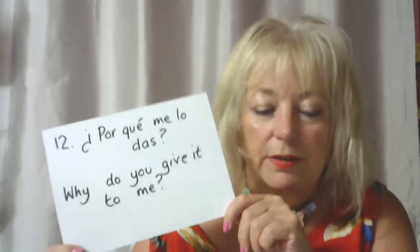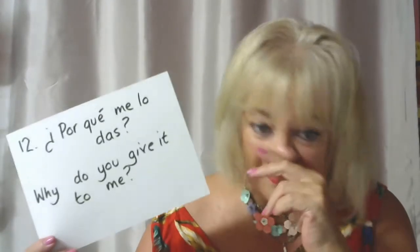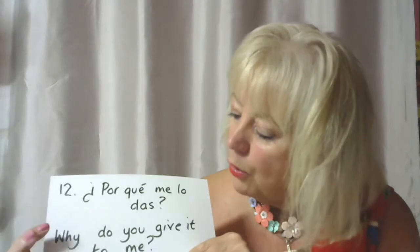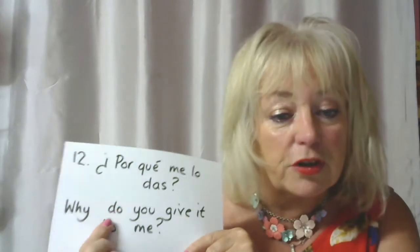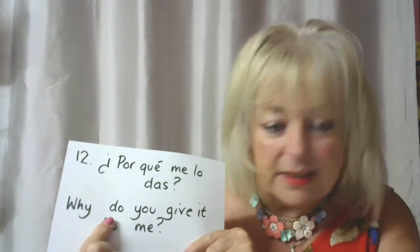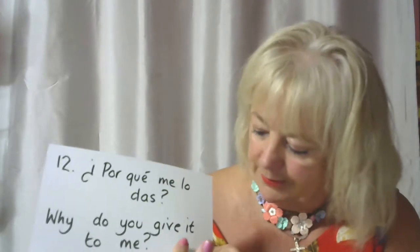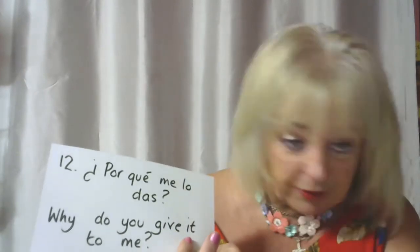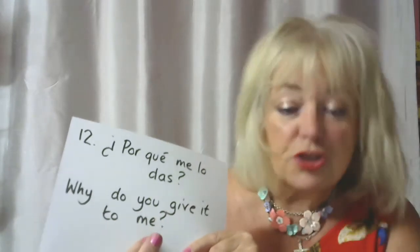Number twelve: ¿Por qué me lo das? Present tense. 'Por qué' is 'why'. Why do you give it to me? Breaking it down: 'do you' — auxiliary verb present tense; 'give' the main verb; 'it' — direct object pronoun; 'to me' — indirect object. Why do you give it to me?